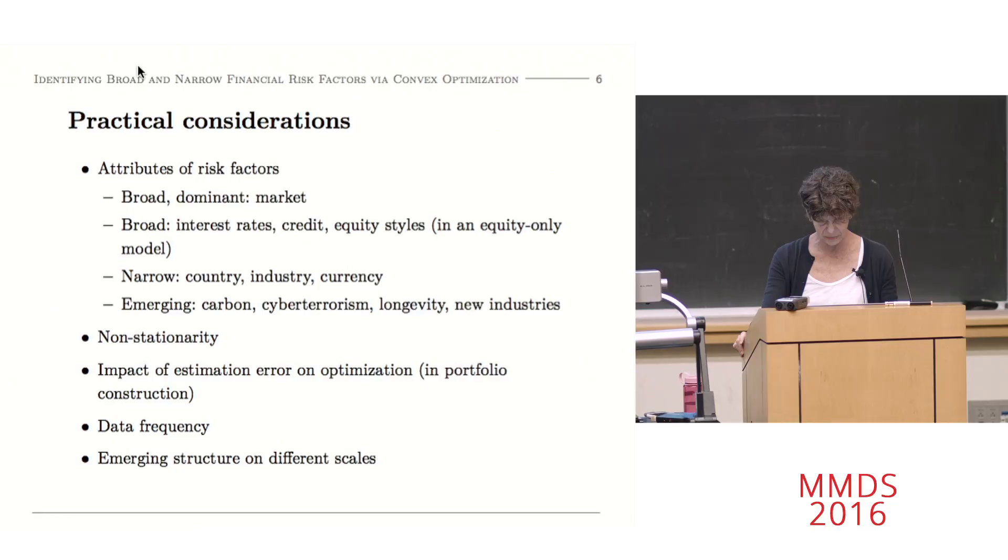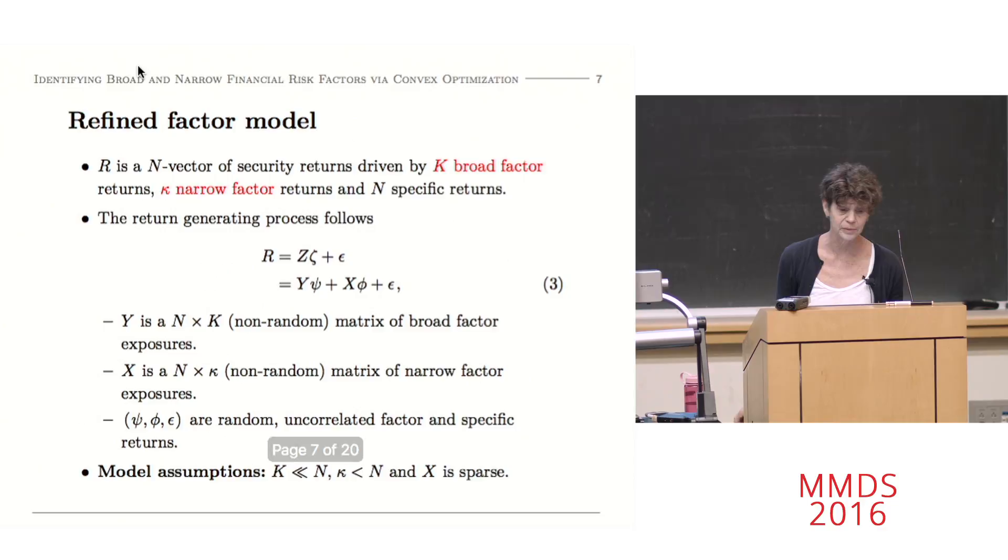There's a bullet point at the bottom here, which I think is an argument for some of the things that I'm going to show you. Emerging structure on different scales. If you think of emerging narrow factors or emerging broad factors, maybe climate sensitivity or some new industry coming out. The internet was a big problem back early in the 2000s. You can think of what is the size of the cohort that's going to be exposed to that factor. And in designing algorithms that go after these factors, they're going to have to be sensitive to what it is they're looking for.